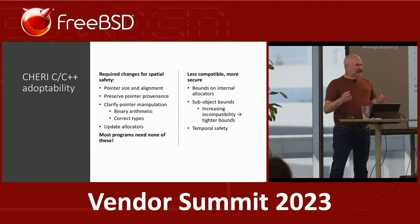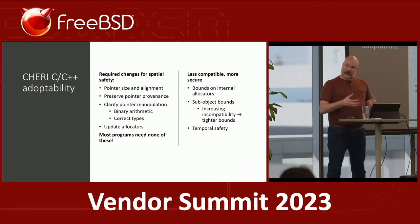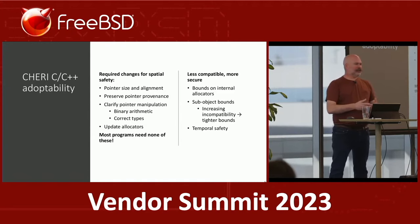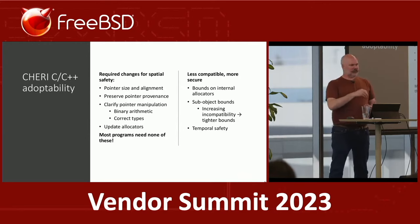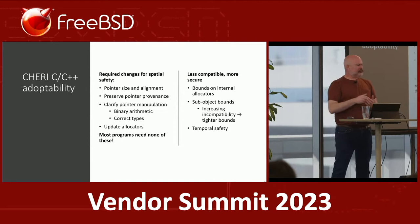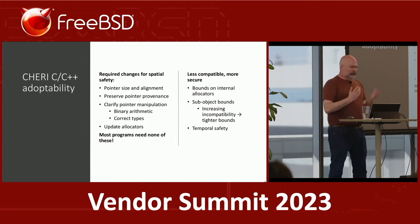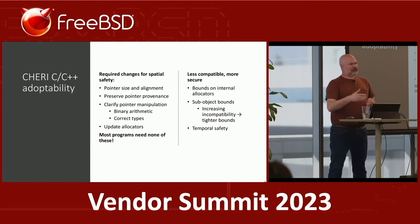Most programs in FreeBSD required no changes at all. For OpenSSH — a moderately complicated program — the original version required three changes, and I think we may have no changes in the tree right now. One fix was submitted upstream and accepted; the others were overcome by events because OpenBSD needed to fix the same things for different reasons — for instance, they added a feature to re-exec the child for randomization and had to switch from passing pointers to passing indexes, which is exactly what our code did.